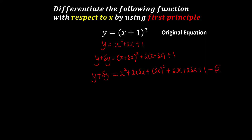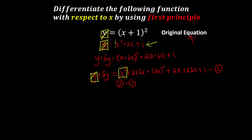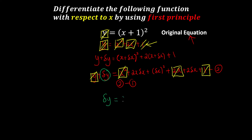Now we have the second equation and the original equation. So we do simultaneous — the second equation minus the original equation. The y and y cancel after subtracting, leaving no more y. The x squared and x squared cancel out, 2x and 2x cancel out, and 1 and 1 cancel out. So we are left with delta y, which is equivalent to 2x·delta x plus delta x squared plus 2·delta x.